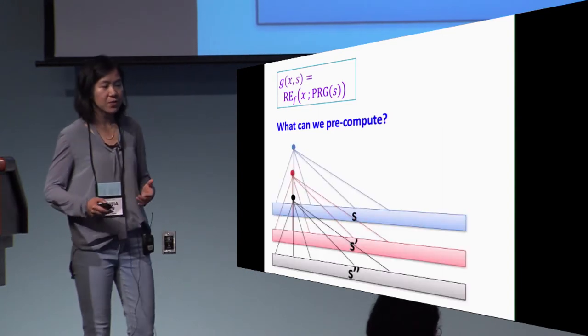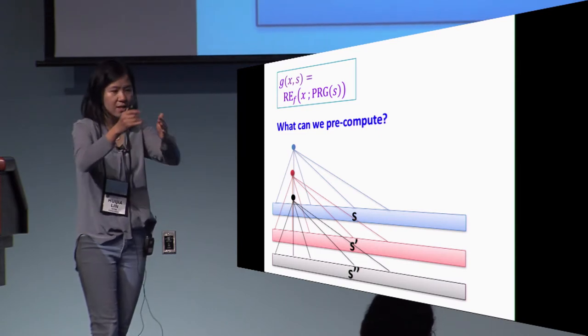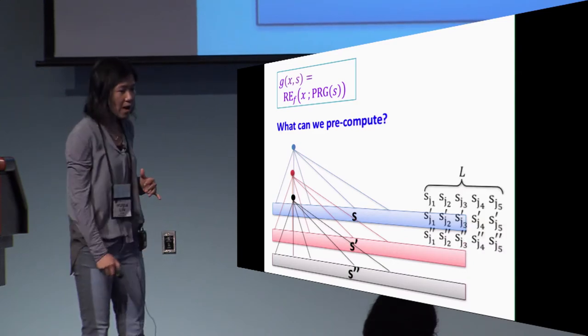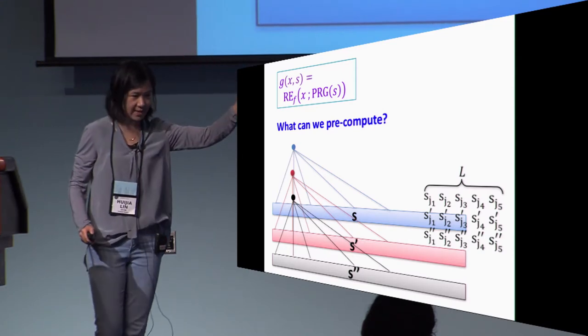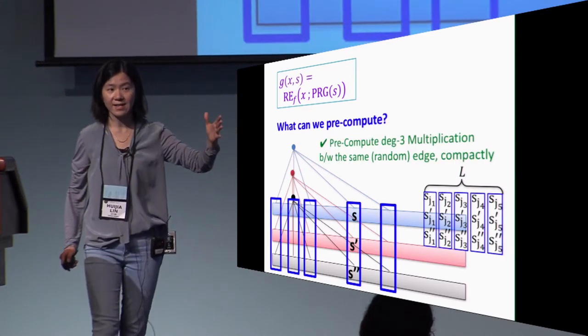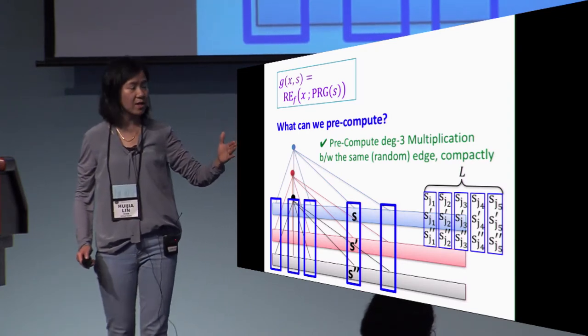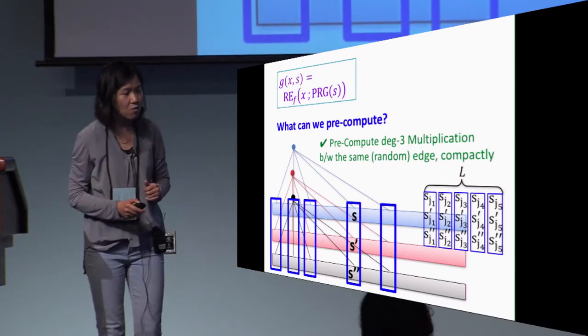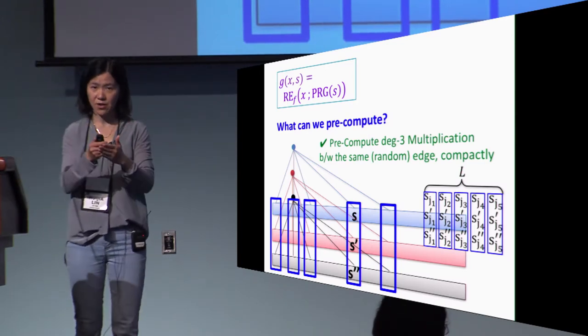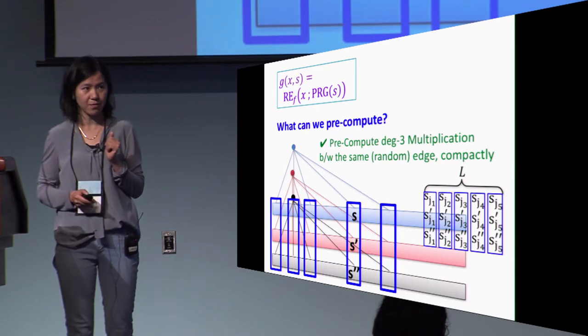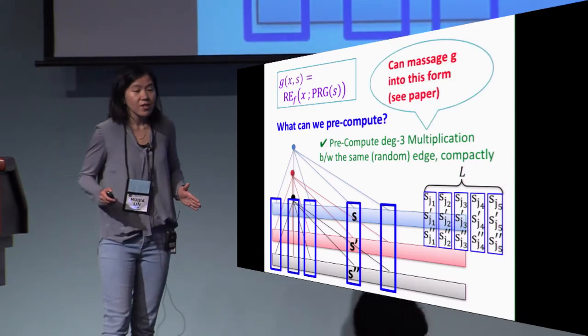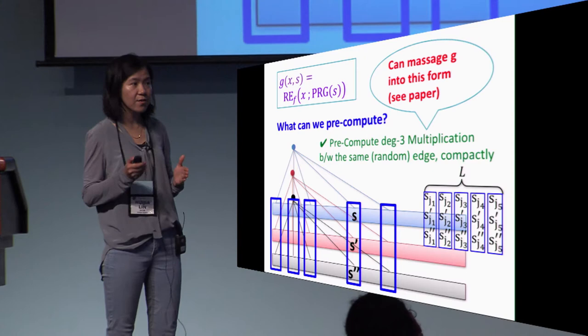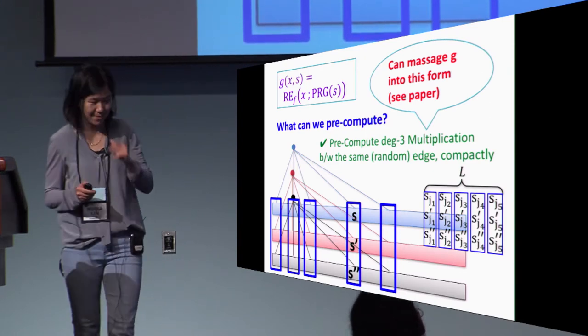Given this is difficult, we ask the question: what can we precompute then? It turns out what we can precompute is to multiply together PRG output bits that depend on the same random edges but two different seeds. Why? Because now in this huge product of different seed elements, each of the columns are in fact aligned. Therefore, we can precompute degree three computation between the same random edges across different seeds. With those precomputed monomials, we can compute the product of PRG outputs using only the locality of the PRG. It turns out this observation is enough. With much work, we can massage the function G we want to compute into this form and therefore enable preprocessing. I don't have time to go into the details. Please see the paper for more detail.